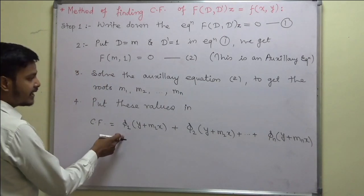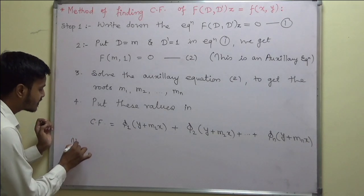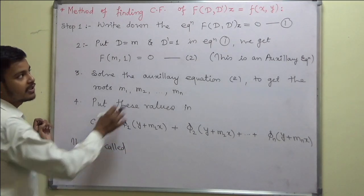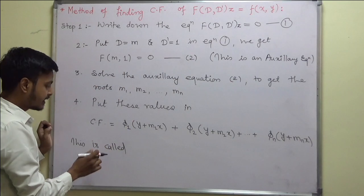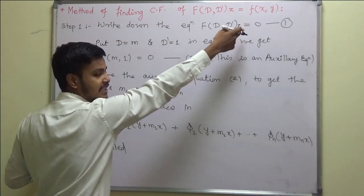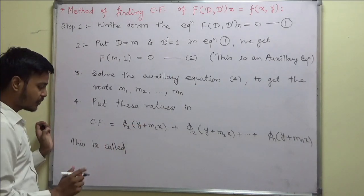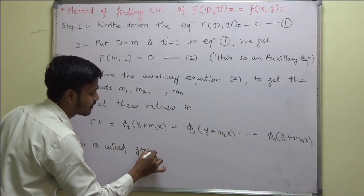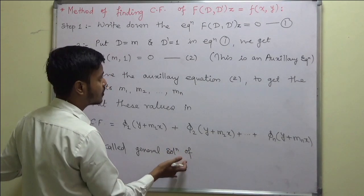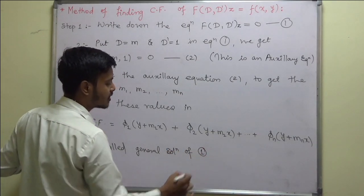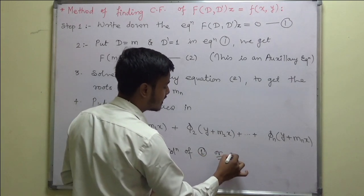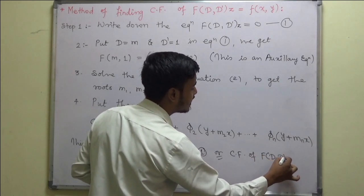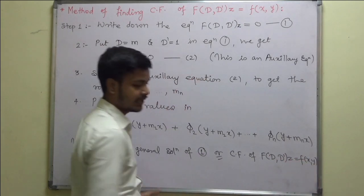This is the complementary function for the given problem. If the right-hand side is zero, this is going to be the general solution — the general solution of equation 1, or equivalently, the complementary function of f(D, D') operating on z equals f(x, y).